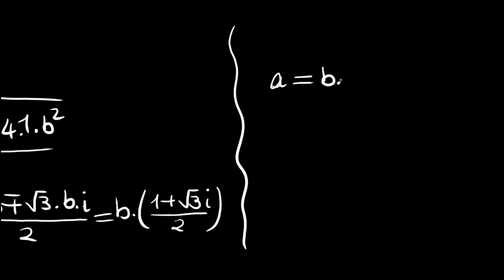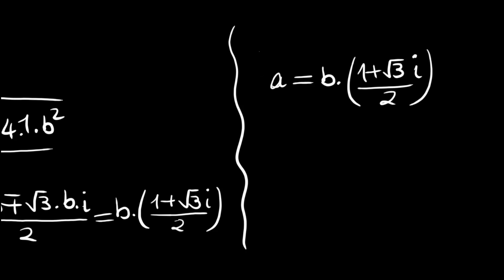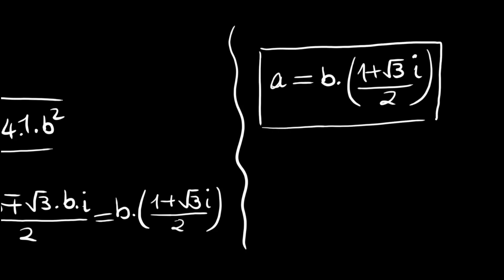a is equal to b times 1 plus the square root of 3 times i, all divided by 2. This is the general solution. There are no real solutions since the discriminant is negative, but these complex solutions are valid. Thank you for watching and see you in the next videos.